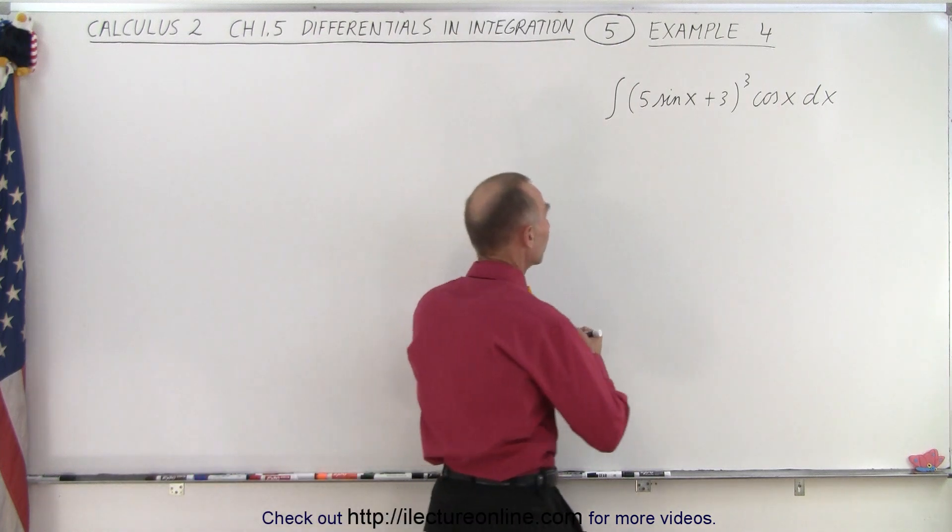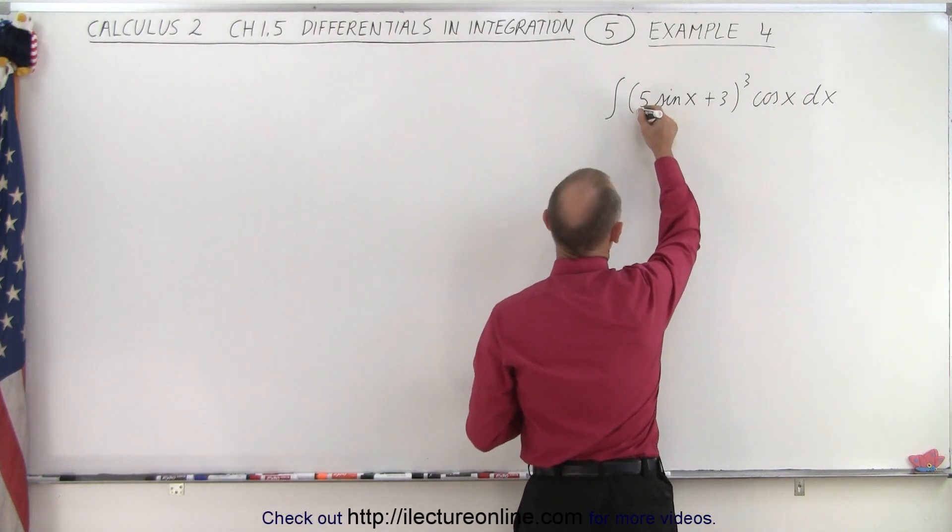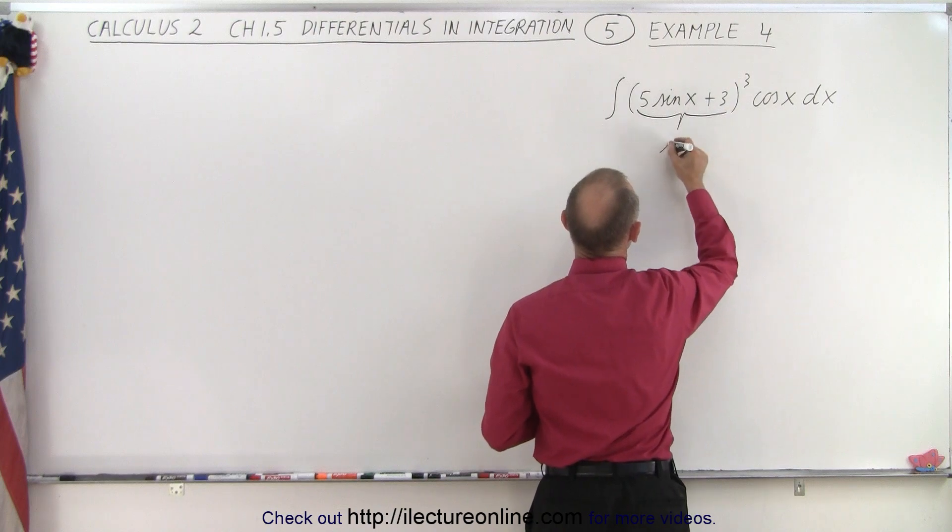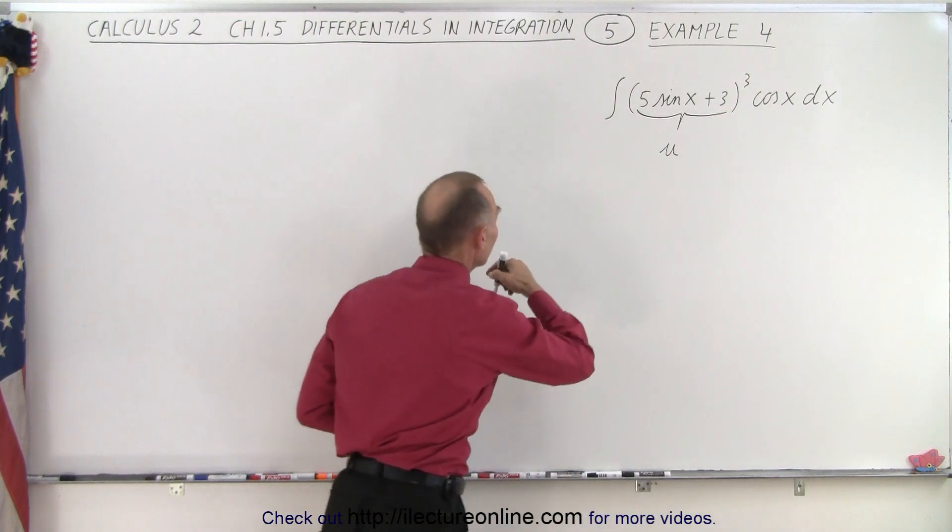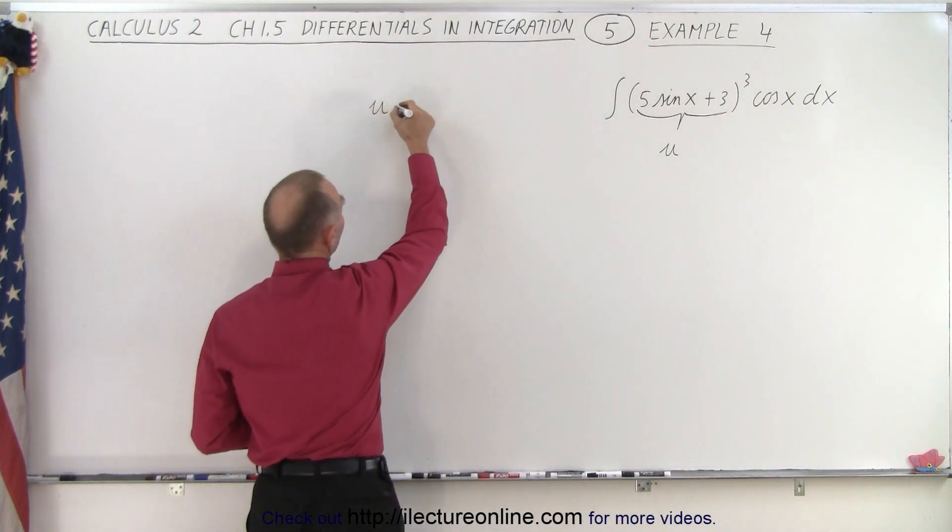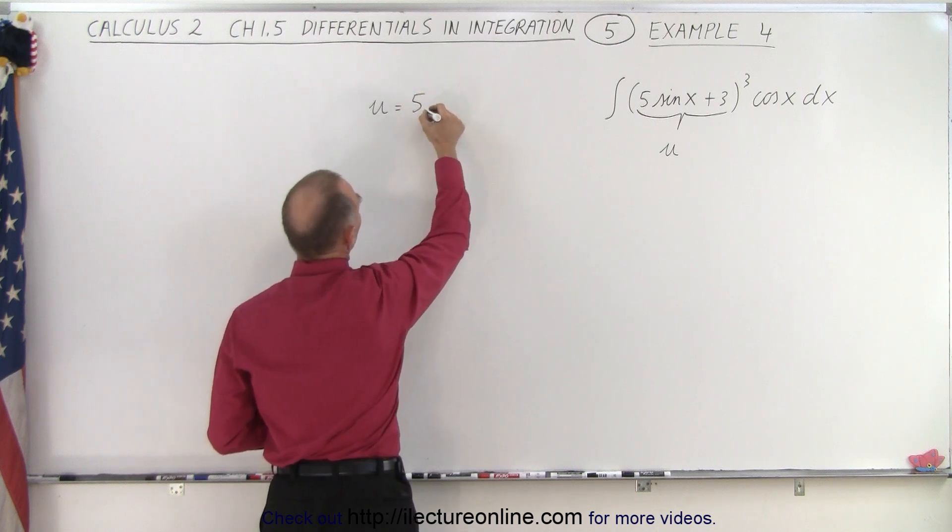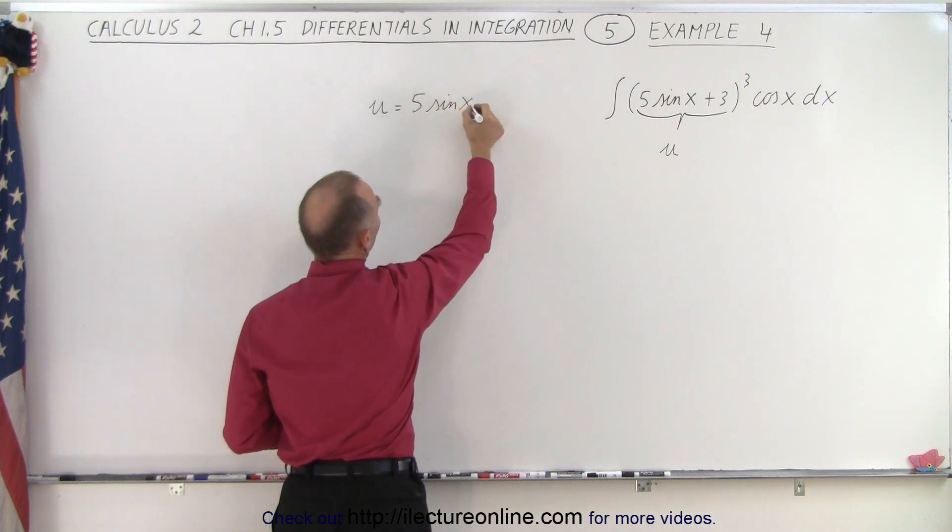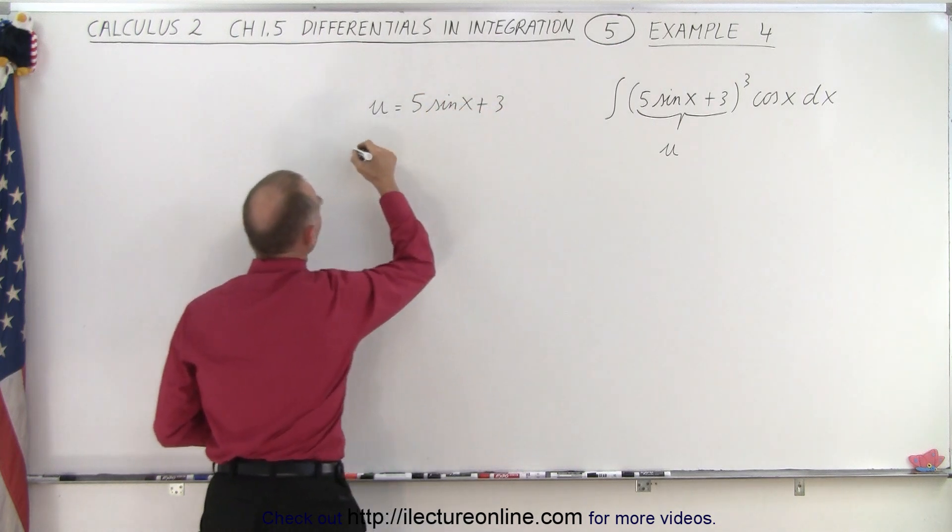So again, what we do here is we take what's inside the parentheses and we call that u. And that means we come over here, we write u as 5 times the sine of x plus 3, and then the du dx,